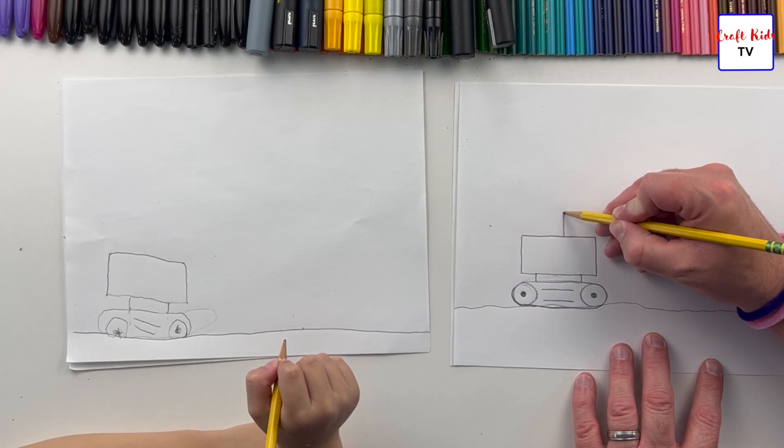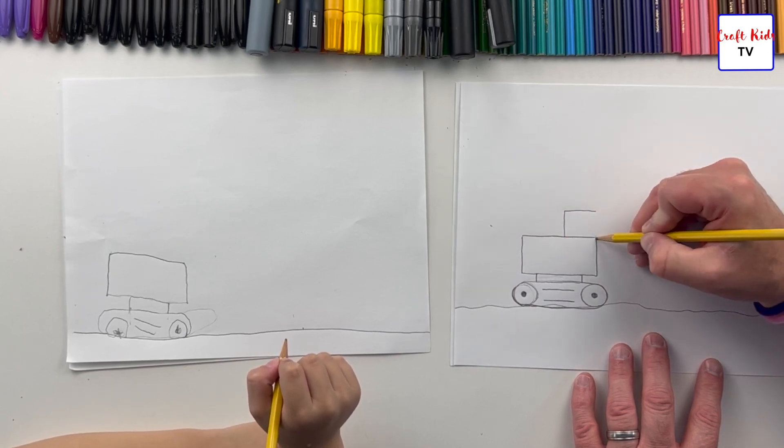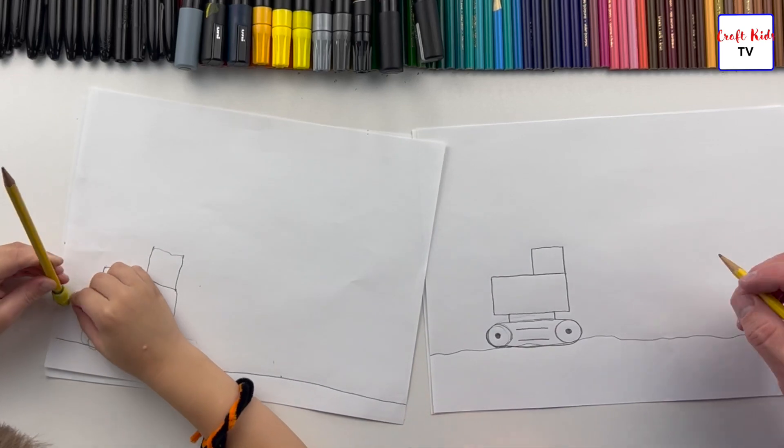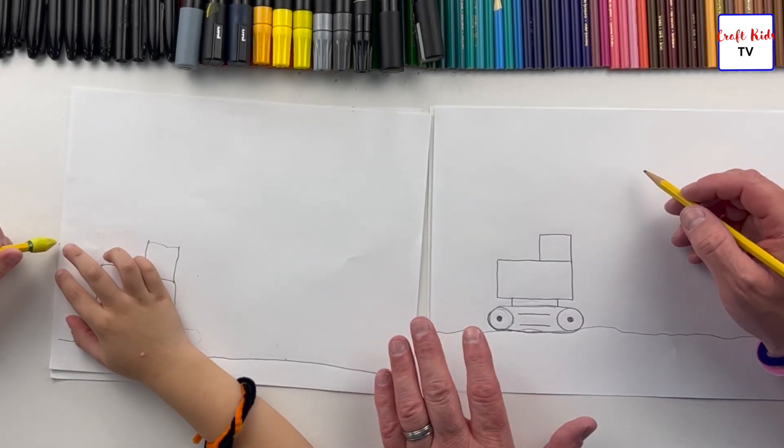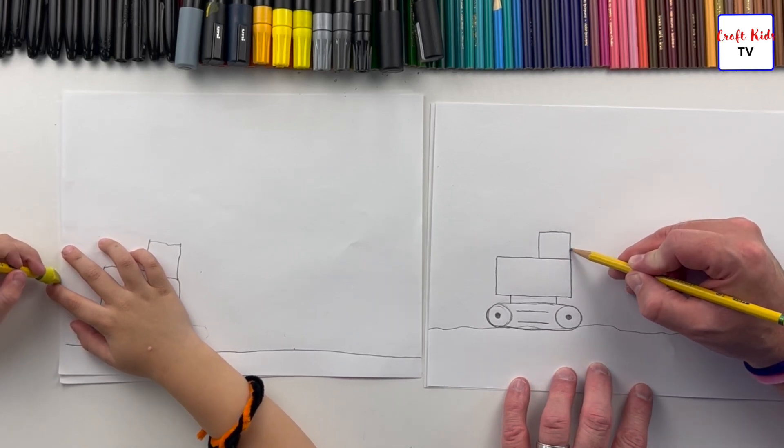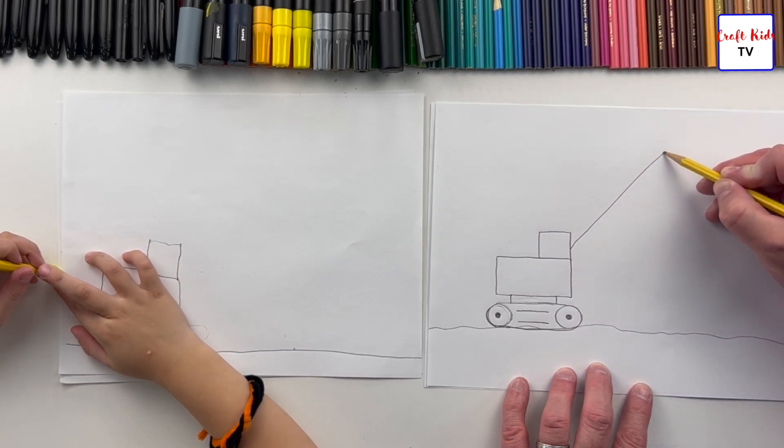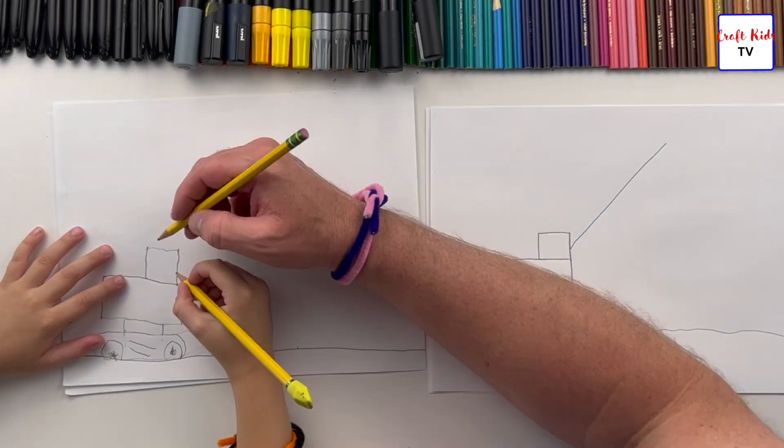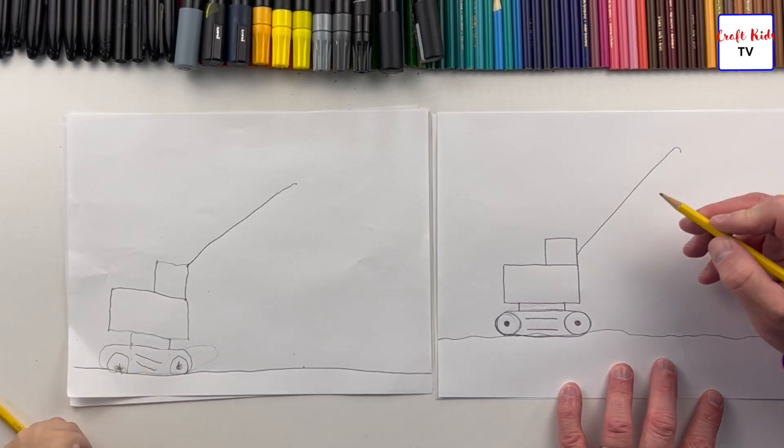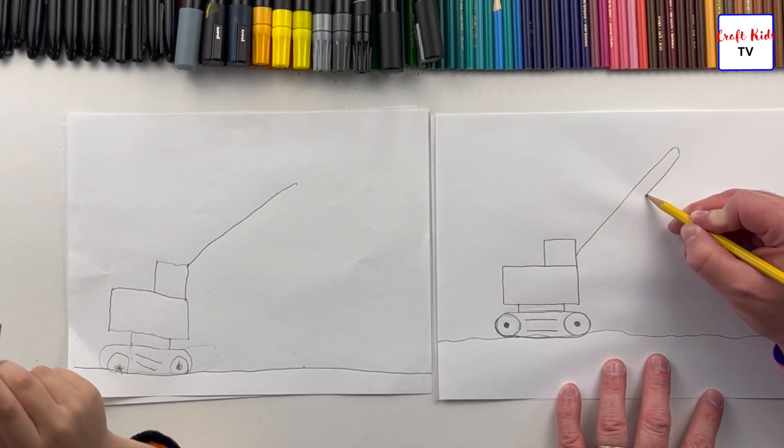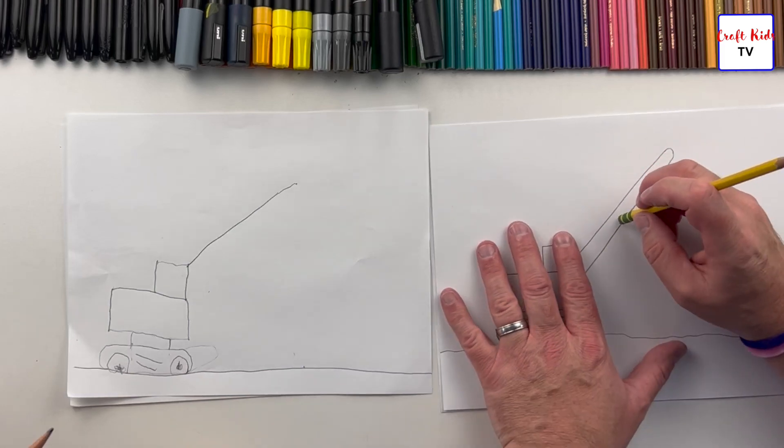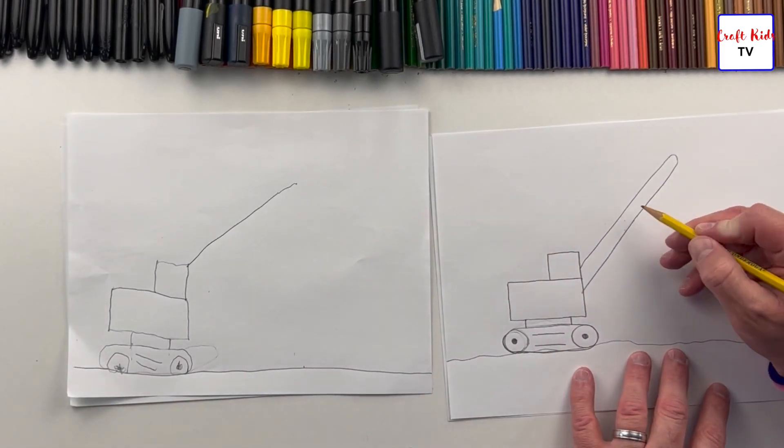So now we're going to draw the big boom arm. Ready? Pay attention. Out of the cab—well, it's really behind the cab, but it's going to look like it comes out of the cab—is a great big long boom that goes way up here. Then we're going to do a little curve on it and have it come all the way straight back down.